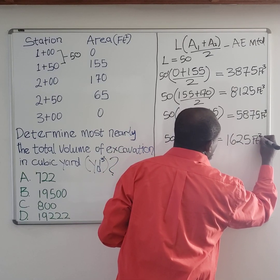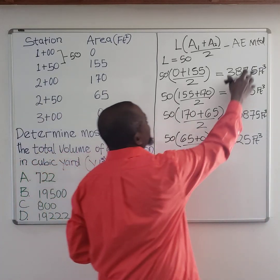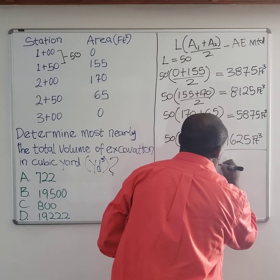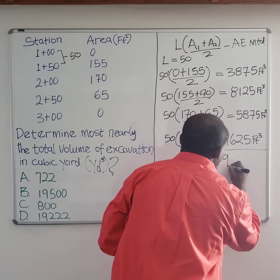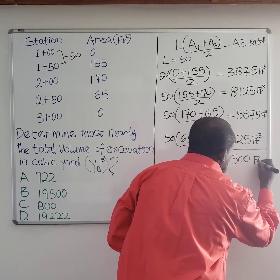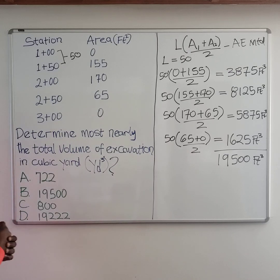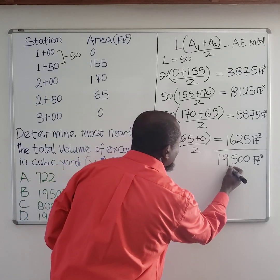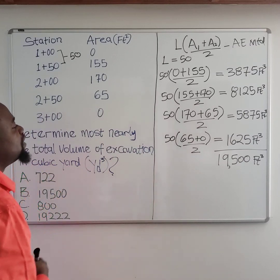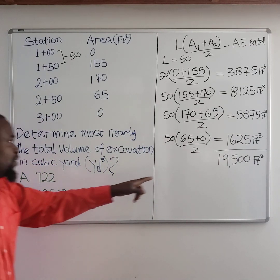Now you need to add all of these together. If you add all of this together you're going to have 19,500 cubic feet. You have to be careful because this value may appear as one of your answer options.